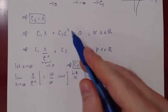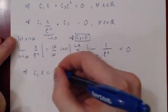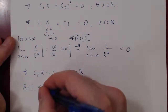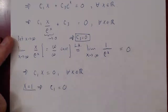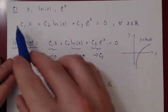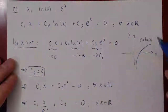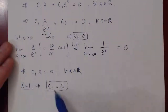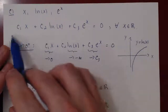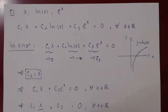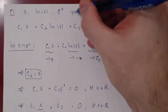Now with c3 = 0, we have c1·x = 0 for all values of x. Simply let x = 1: c1·1 = c1 = 0. Going back, we had c1·x + c2·ln(x) + c3·eˣ = 0 for all real x, and we proved c2 = 0, c3 = 0, and c1 = 0. The only possible linear combination giving zero is the trivial solution, therefore our three functions x, ln(x), and eˣ are linearly independent.